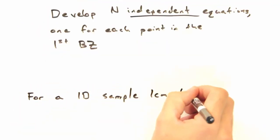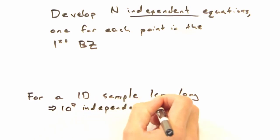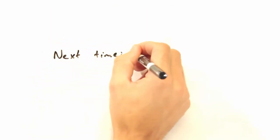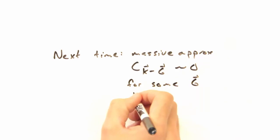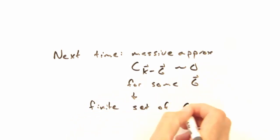For a one-dimensional sample one centimeter long, that'll give us 10 to the 7th independent points. We'll be solving each of those by hands. That's a terrible idea, Eric. Next time, we'll figure out which c sub k minus g coefficients are non-zero and simply just throw the rest out.